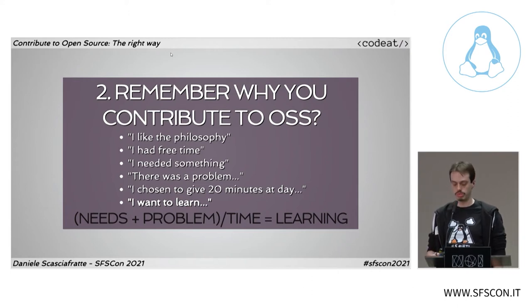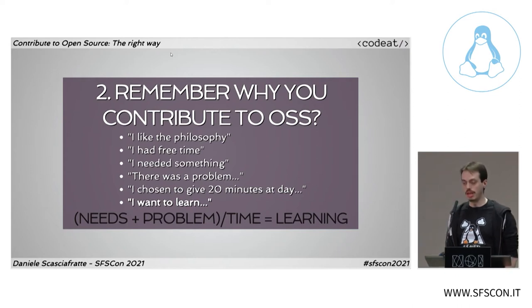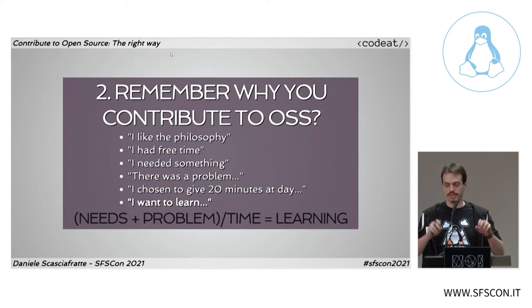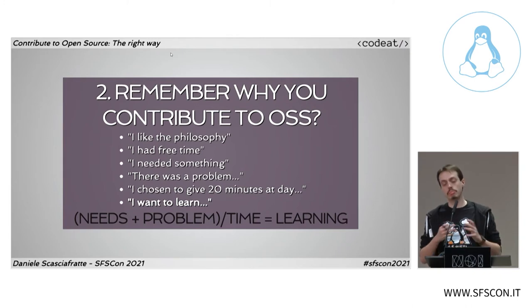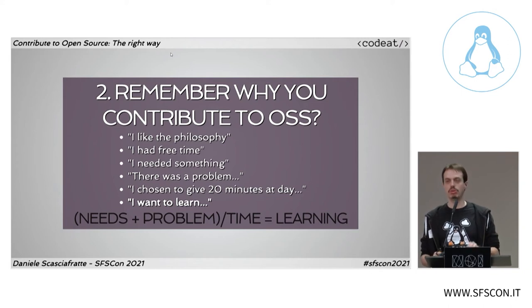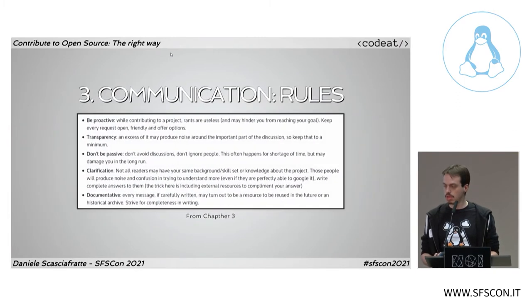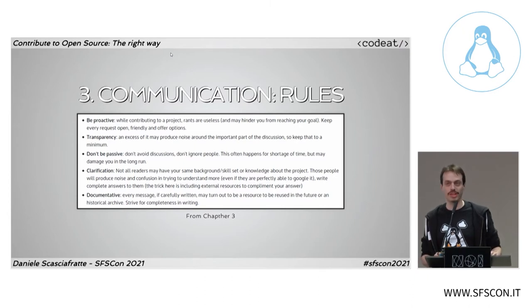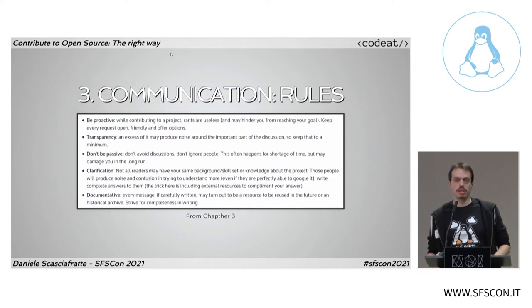Usually, for me, it comes down to wanting to learn. I wrote a kind of algorithm: everything that you want to learn, follow it. A need or a problem, with time, helps you do better what you want to achieve because it is something you need. As open source is built by people, you need to communicate with people. As a developer, I am not always the best at communicating, so I need to improve — for example, speaking better English.